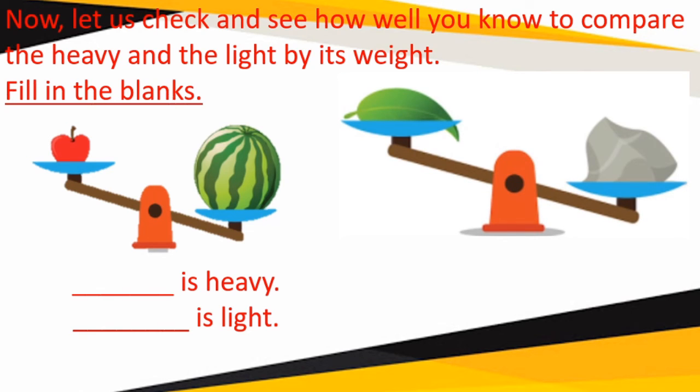Here you can see a leaf and a stone kept in a weighing scale. The leaf is blank. The stone is blank.